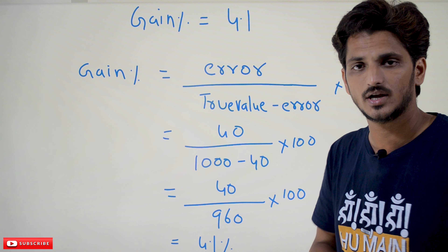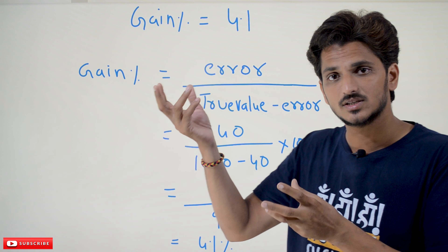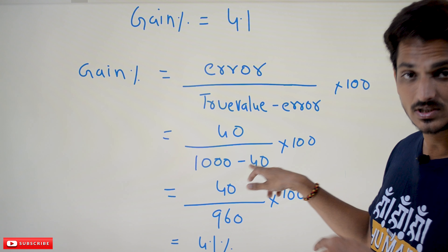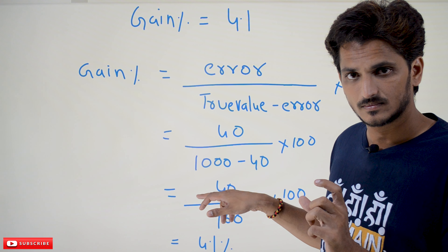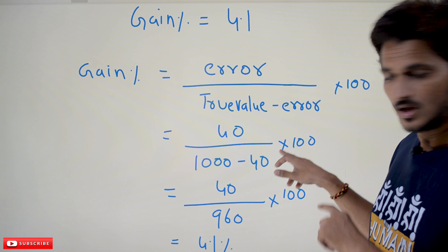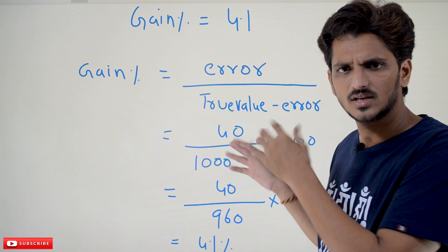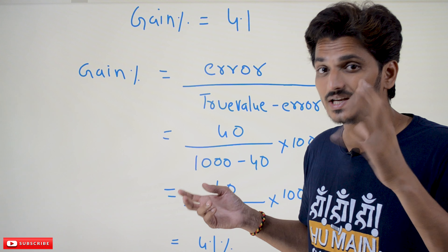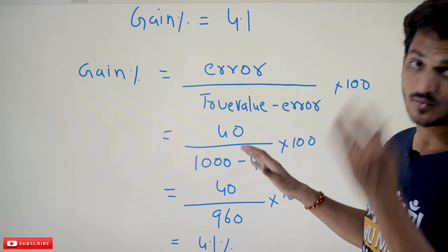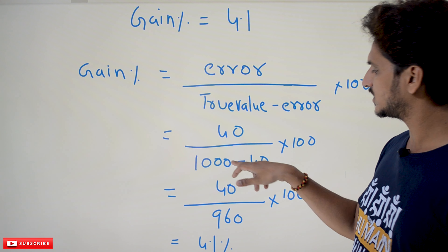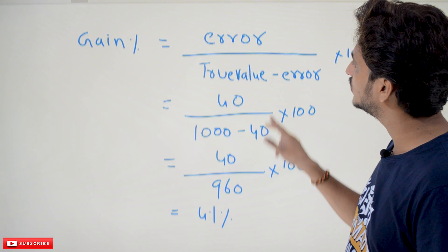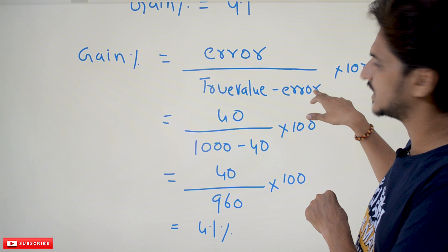Whatever the cost price is, it won't affect the percentage — that's why the equation uses true value minus error, which is 1000 minus 40, equaling 960. That is the actual weight sold. 40 out of 960, multiplied by 100, gives 4.1%. The denominator is (true value minus error) because that is the weight actually sold at cost price. That is how you derive: gain percentage equals error divided by (true value minus error), multiplied by 100.